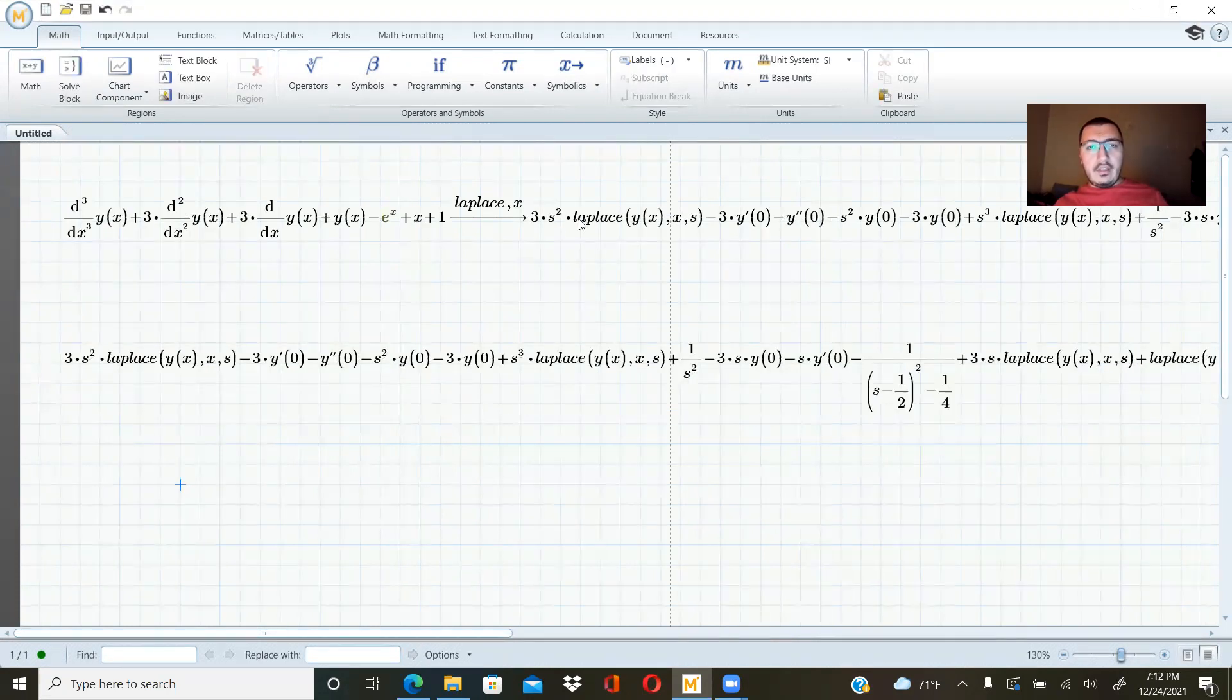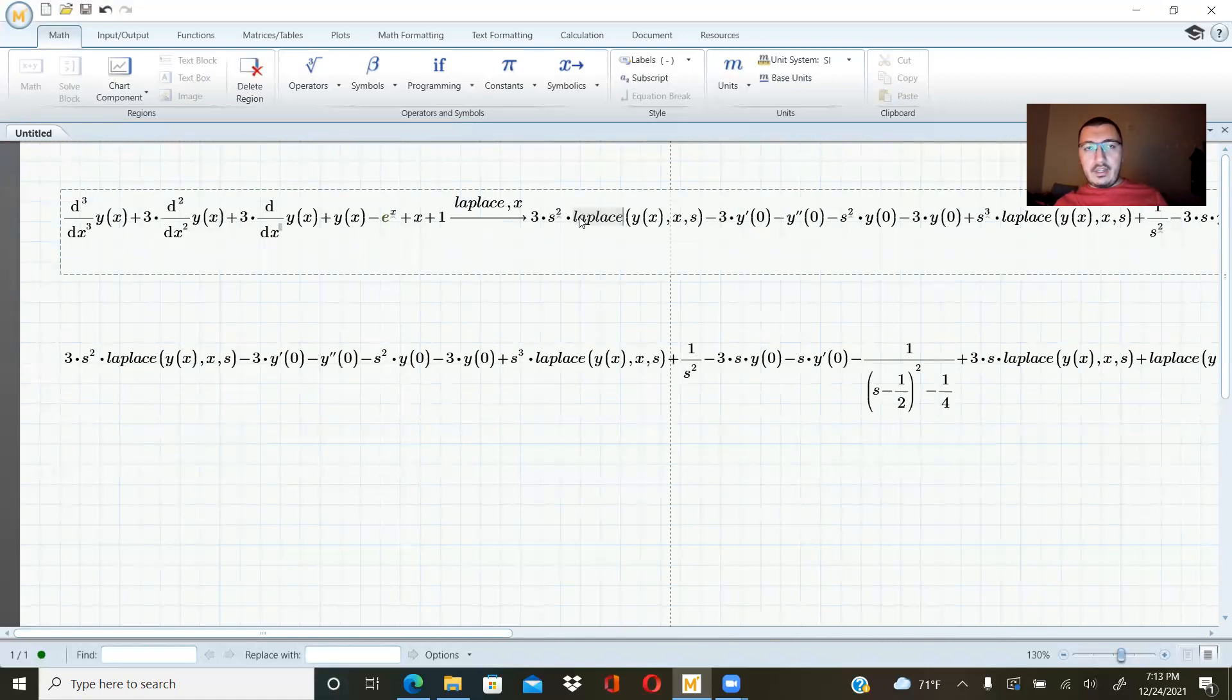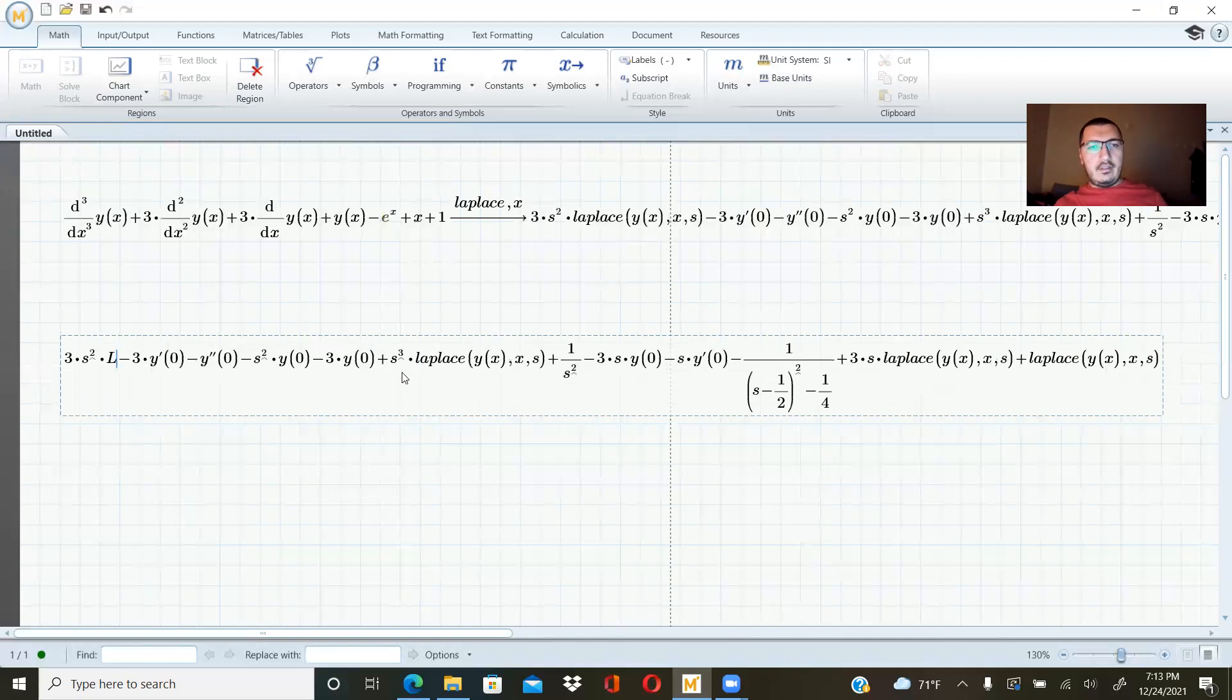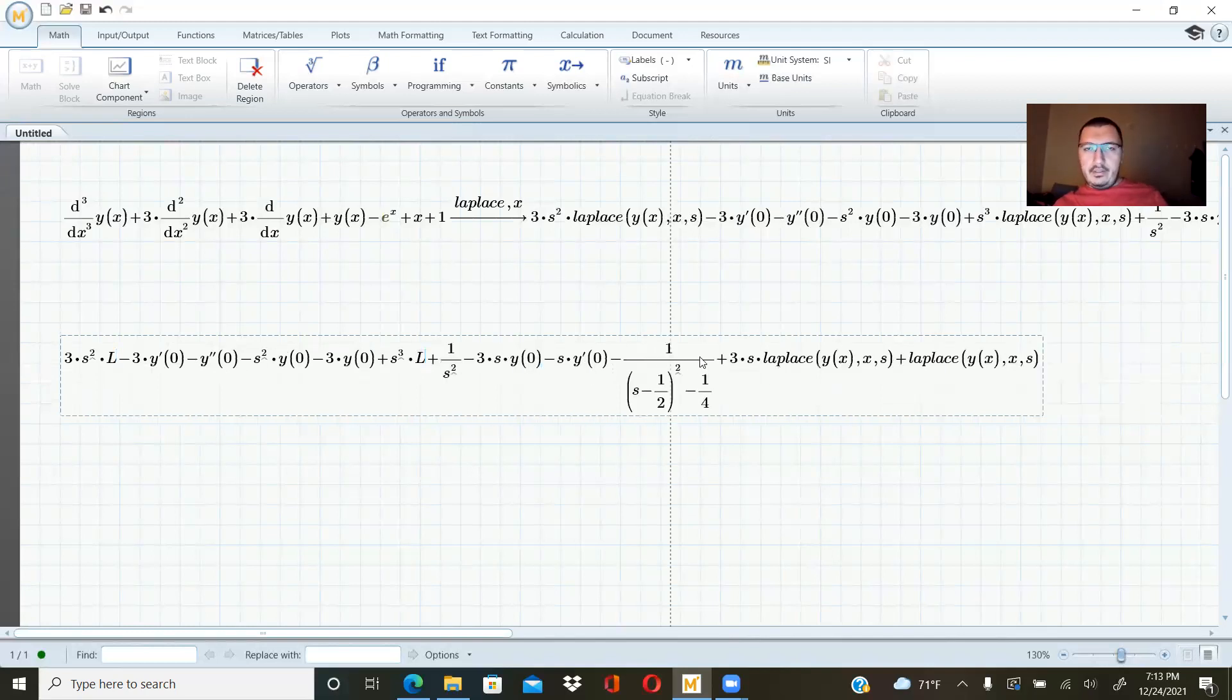Now, whenever I see an expression like Laplace in parenthesis something, I will write instead of this, I will write L, the big L. And here another, I am writing L. This will be L, and this will be L.